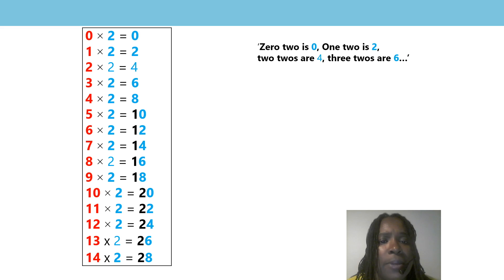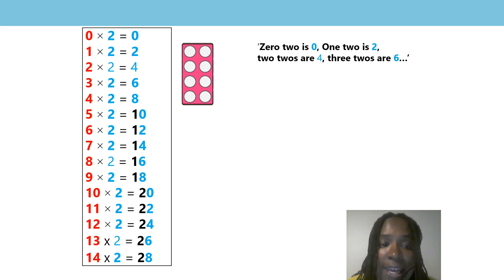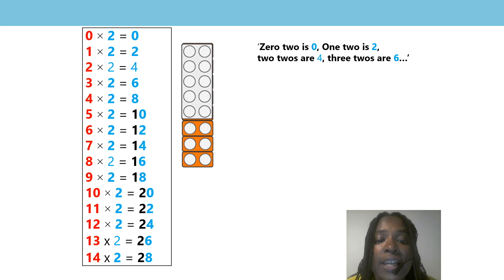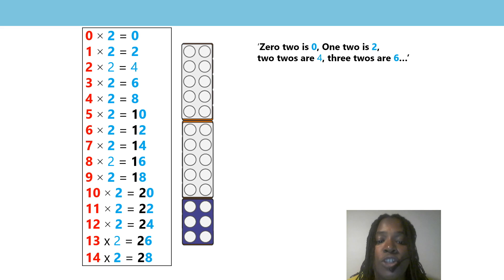Let's have a look at our two times table again and we're going to use our stem sentences to help us. Are you ready? 0 times 2 is 0. 1 times 2 is 2. 2 twos are 4. 3 twos are 6. 4 twos are 8. 5 twos are 10. 6 twos are 12. 7 twos are 14. 8 twos are 16. 9 twos are 18. And 10 twos are 20. 11 twos are 22. 12 twos are 24. 13 twos are 26. And 14 twos are 28.